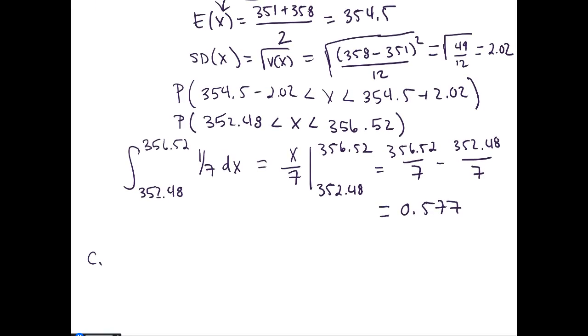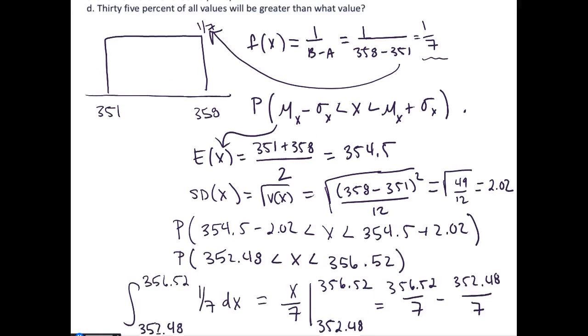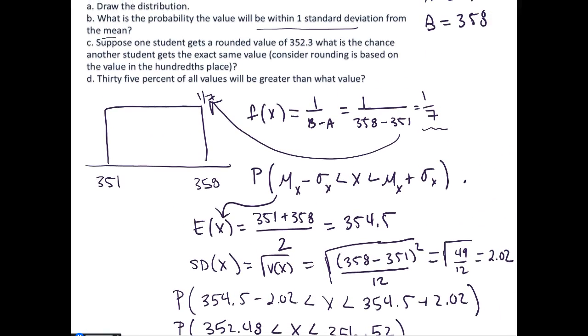The next problem is a little bit different. It asks: suppose one student gets a rounded value of 352.3, what is the chance another student gets the exact same value? That means consider that each value is rounded based on the hundredths place value.